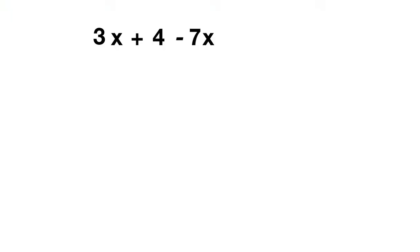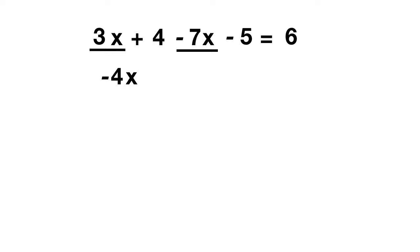Let's solve one together. The equation is 3x plus 4 minus 7x minus 5 equals 6. We start by combining the terms with x: 3x and minus 7x. What's 3 minus 7? Well, 3 minus 7 is negative 4, so we have negative 4x.